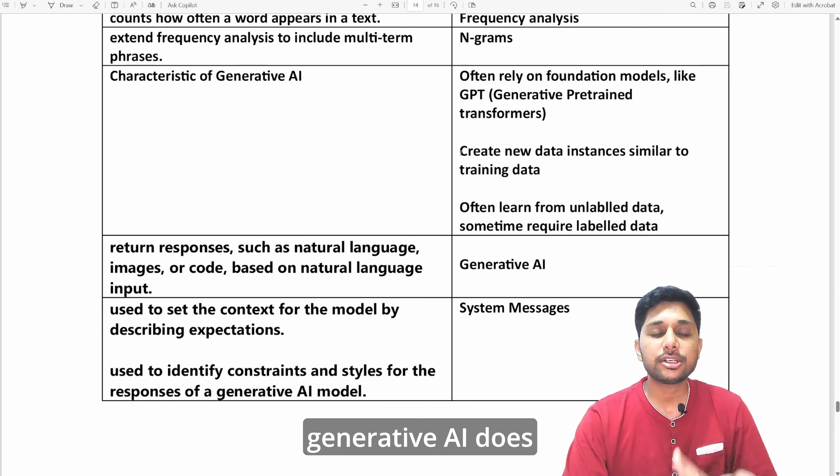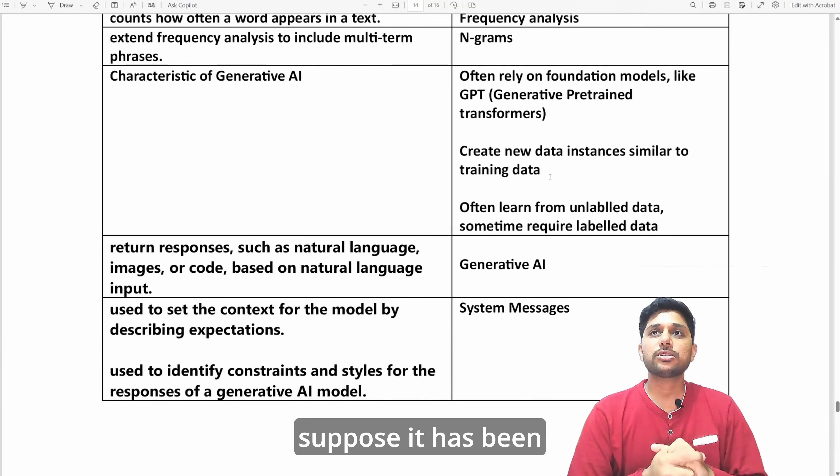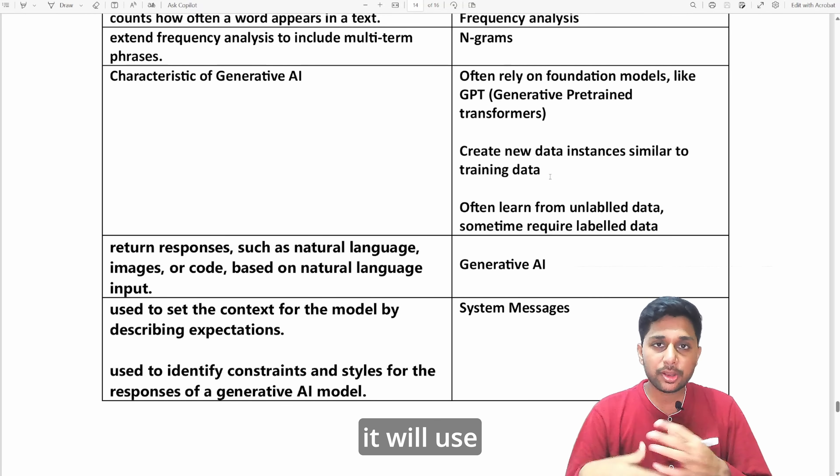Basically what generative AI does is generate new content. In technical terms, you can say it creates new data instances similar to what it is trained upon. Suppose it has been told to write an essay or something, it will generate new content using new words and different combinations which it has not been trained on.